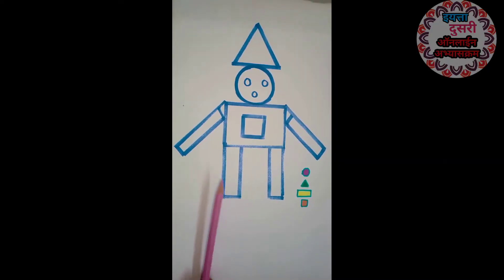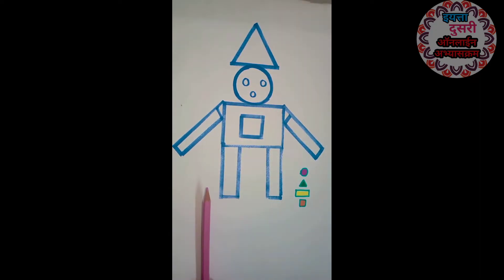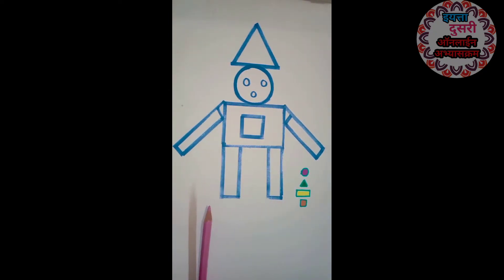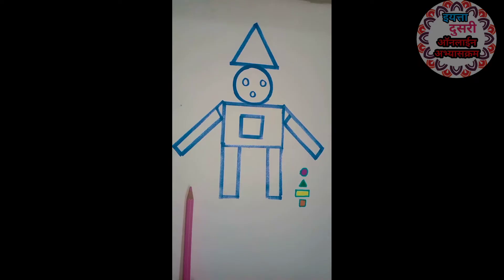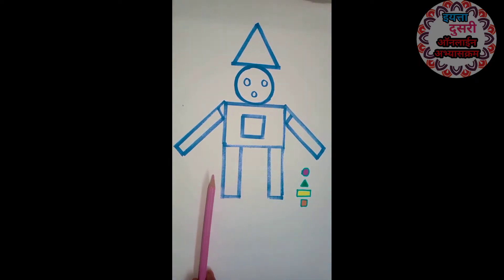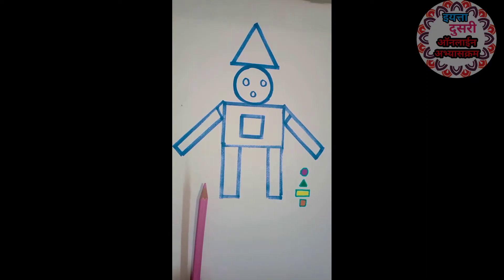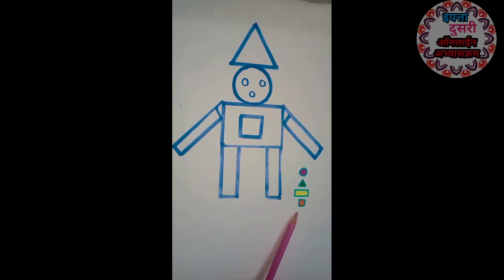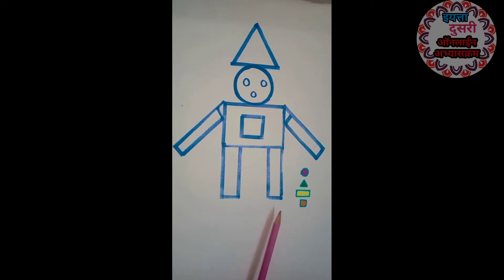Students, here I draw a design. Identify the shapes and color: circle, triangle, rectangle, and square.